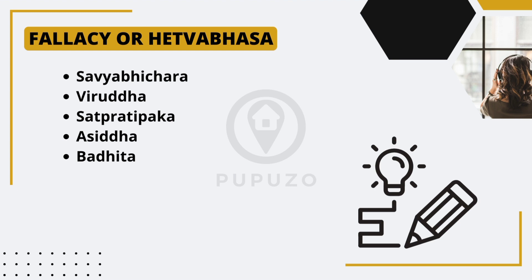Baditar, also known as the fallacy of non-elimination, occurs when an argument fails to address or refute opposing viewpoints or counter-arguments. This fallacy arises when someone ignores or neglects valid opposing arguments that could potentially undermine their own argument. By not considering alternative perspectives, the argument becomes incomplete and less persuasive.